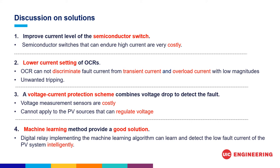The machine learning method provides a very good solution. After learning the fault current characteristics, a machine learning algorithm can be implemented in digital relays to detect the low fault current of the PV system intelligently.